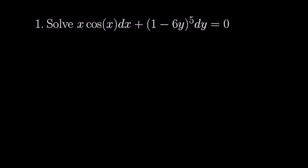For our first problem we're going to want to solve the differential equation x times cosine of x dx plus 1 minus 6y to the fifth power dy is equal to 0. Right away it's pretty easy to tell that this equation is separable. On the left hand side here we have our x terms, and on the right hand side here we have our y terms. Because we already have our dx and our dy split up, we can integrate each of these — the first one with respect to x and the second one with respect to y.